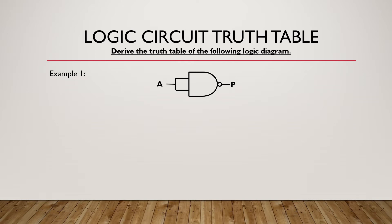Example 1: We have a single input. With a single input, we are going to have only two outputs for P. The value of A is being doubled — we have the same value going through both inputs of this NAND gate. The two output rows are: A=0 gives 0×0=0, inverted to get P=1; and A=1 gives 1×1=1, inverted to get P=0.